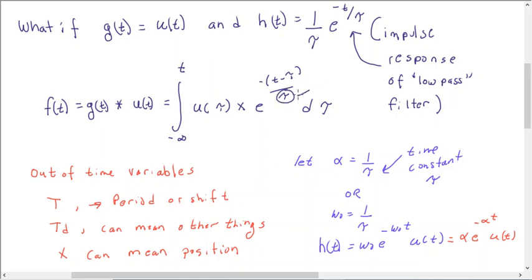So, this is not something to be integrated with. It's a constant and equals RC. This is our integration variable that does relate to time. So what is it an engineer to do? And we are kind of out of time variables. I could try capital T, but that also means period or time shift. Td means other things. X can even mean position.